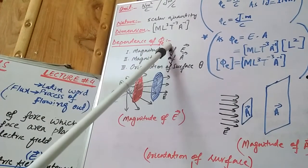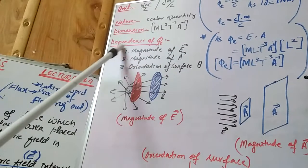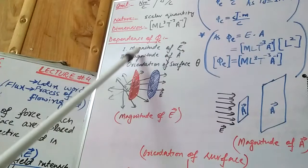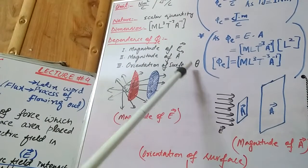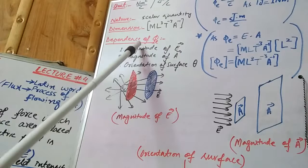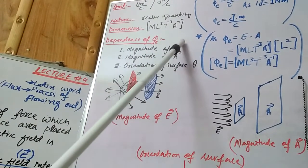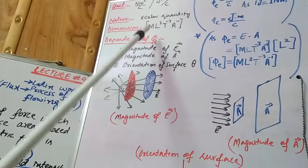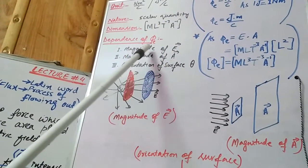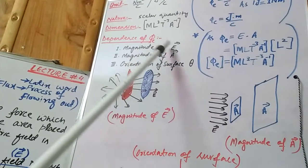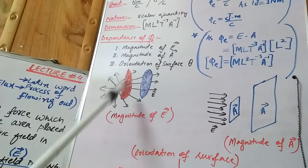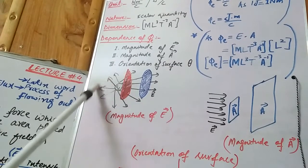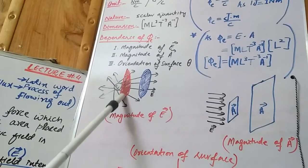The factors affecting electric flux are three: magnitude of E, magnitude of A, and orientation of the surface. If the magnitude of electric field is strong, then electric flux will be greater. I considered a positive charge with its electric field represented by imaginary lines, and I am placing two surfaces: one near the charge and one at some distance from the charge.